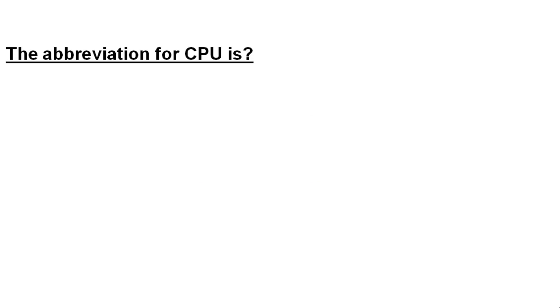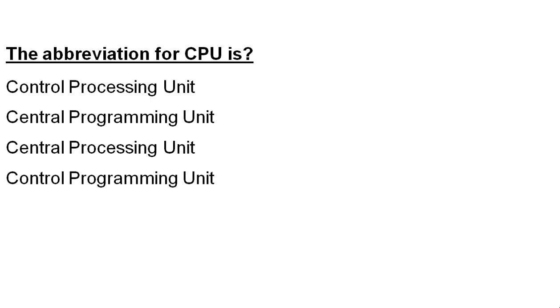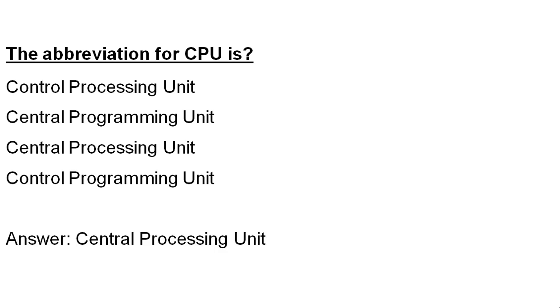The abbreviation for CPU is: Control Processing Unit, Central Programming Unit, Central Processing Unit, or Control Programming Unit? The correct option is Central Processing Unit.